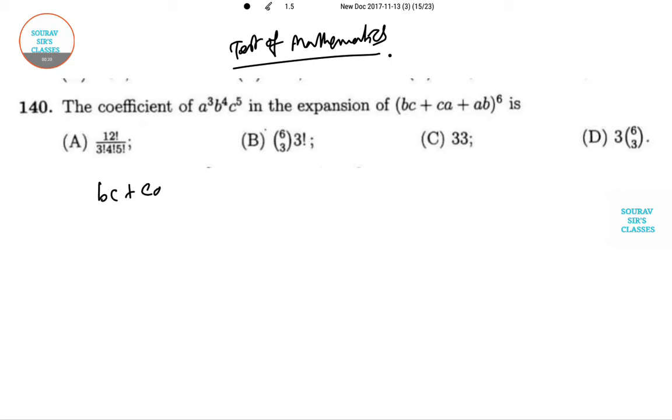(bc + ca + ab)⁶. Now if you proceed with this, you can write 6C0(bc)⁶ + 6C1(bc)⁵(ca + ab), in that way we proceed. But remember that this power, so what is the total power? 5 plus 4 plus 3.